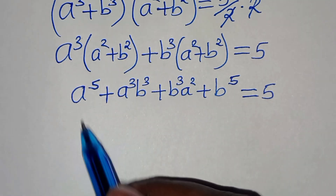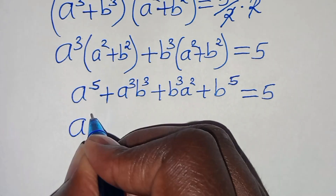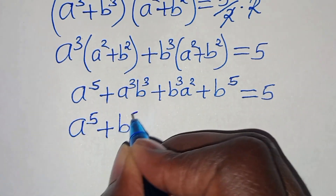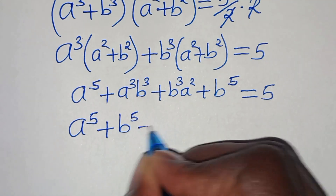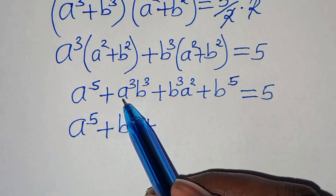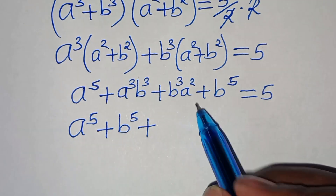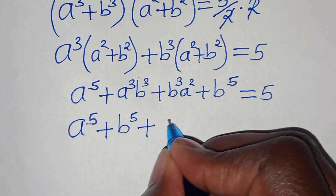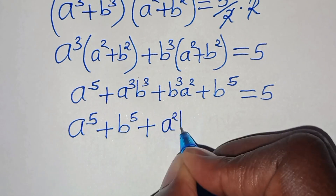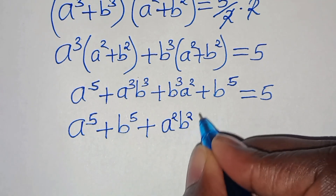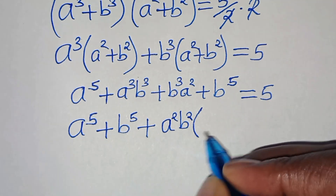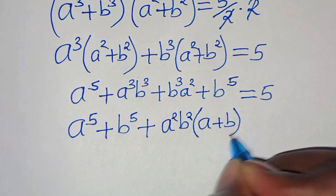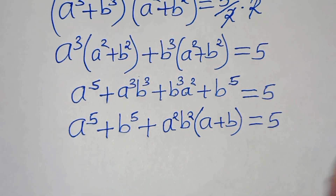So we have a to the power of five plus b to the power of five, then plus the middle terms — a cubed b squared and b cubed a squared — where a squared and b squared are common, so we can factor out to get a plus b. This equals five.